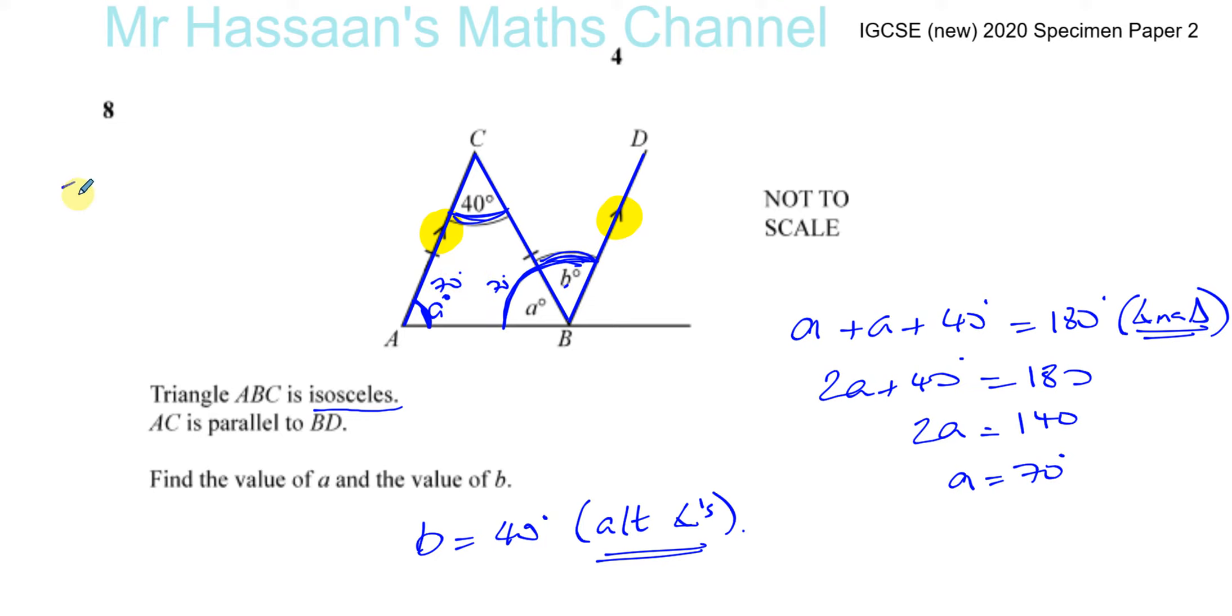So we know that this is 70 and this is 70. So we can say that 70 plus 70 plus B equals 180, because this angle here plus that, added to 70 degrees. The interior angles make a C shape like this, so they add up to 180. So if you solve that, that's going to be 140 taken away from 180, which is 40. Same answer.